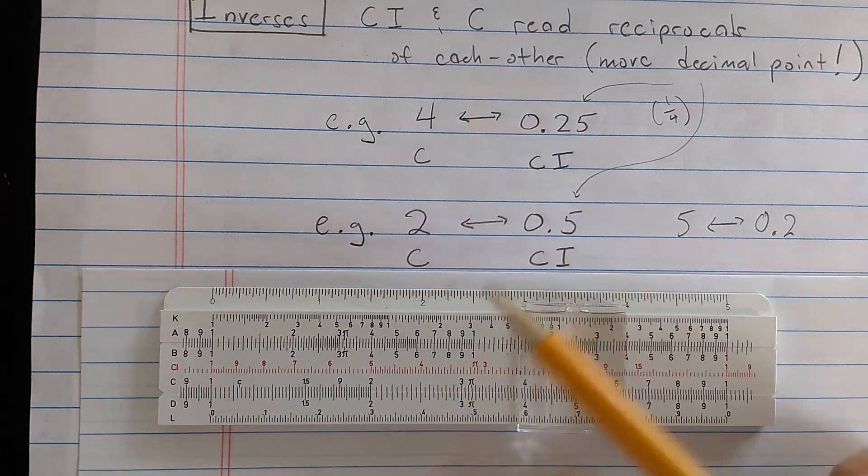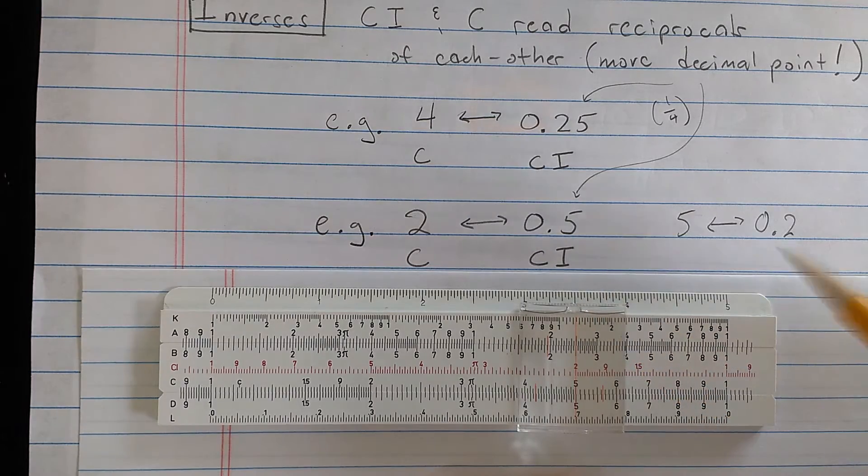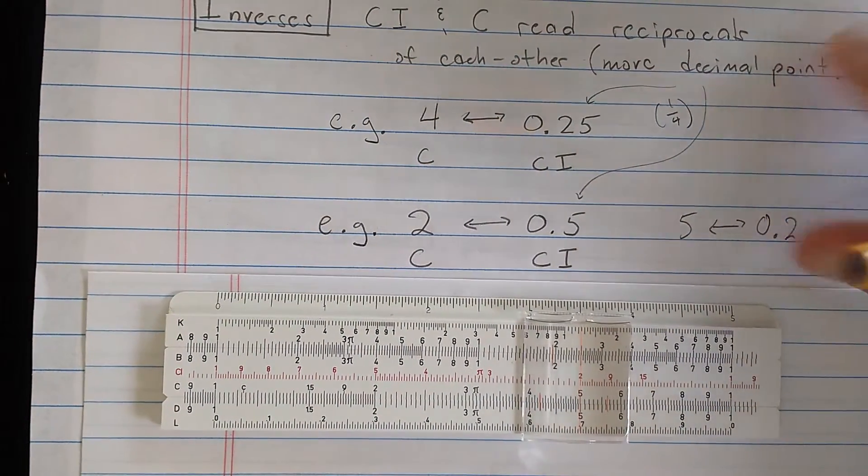That's reading the same numbers on the scales as the 2 and the 0.5. So operator beware.